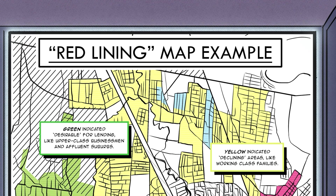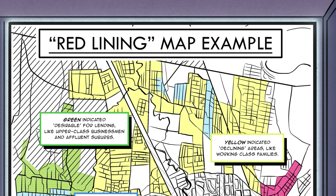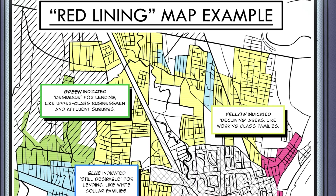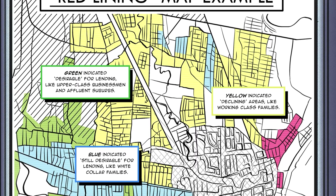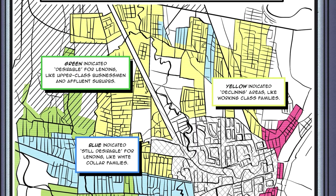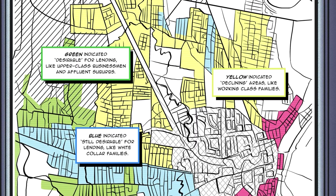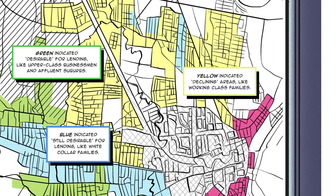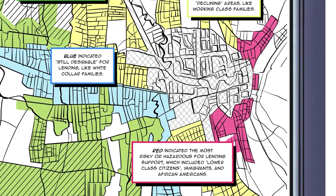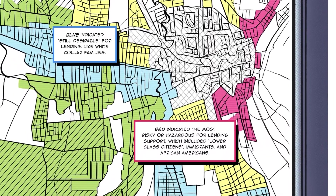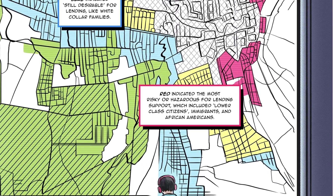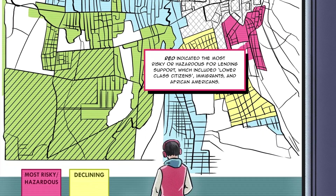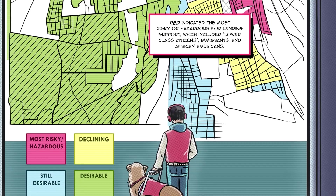Green indicated desirable for lending, like upper-class businessmen in affluent suburbs. Blue indicated still desirable for lending, like white-collar families. Yellow indicated declining areas, like working-class families. Red indicated the most risky or hazardous for lending support, which included lower-class citizens, immigrants, and African Americans.